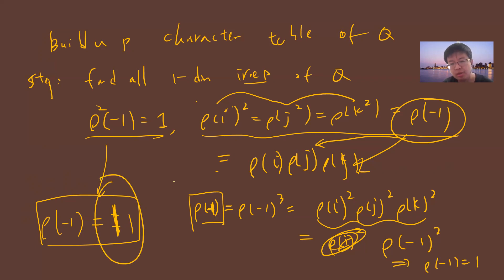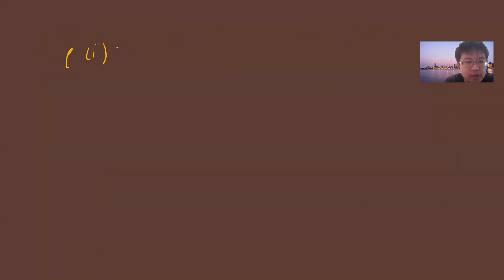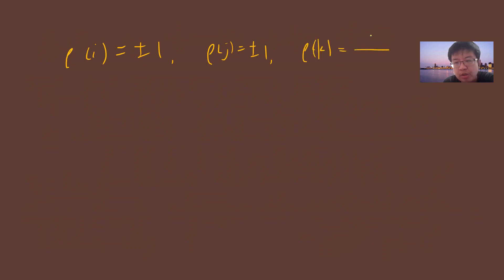Since ρ(-1) = 1 is fixed, we have ρ(i)² = ρ(j)² = ρ(k)² = 1, so each of ρ(i) and ρ(j) can independently be ±1. Then ρ(k) is determined as ρ(k) = 1/(ρ(i)·ρ(j)), which is just the product ρ(i)·ρ(j). This gives us the one-dimensional representations.